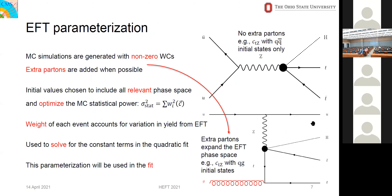Each event really does have its own weight. As we fill a histogram, the weights get stored along with it — event weight one, event weight two, etc. — and they're all quadratic functions. Since quadratic polynomials form a ring, we can sum them all together with no issue to get the expected event yields. As we adjust these Wilson coefficients, the event yields will change up or down along this quadratic curve. Monte Carlo simulations are generated with non-zero Wilson coefficients, which is important because we can't reweight portions of phase space that are initially excluded. We include extra partons when possible since our samples are leading order only.